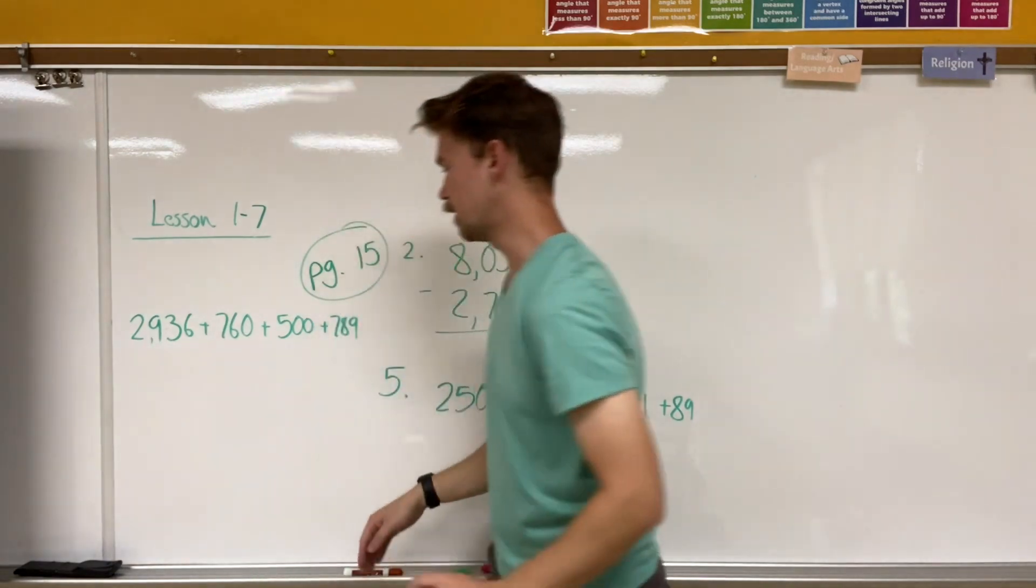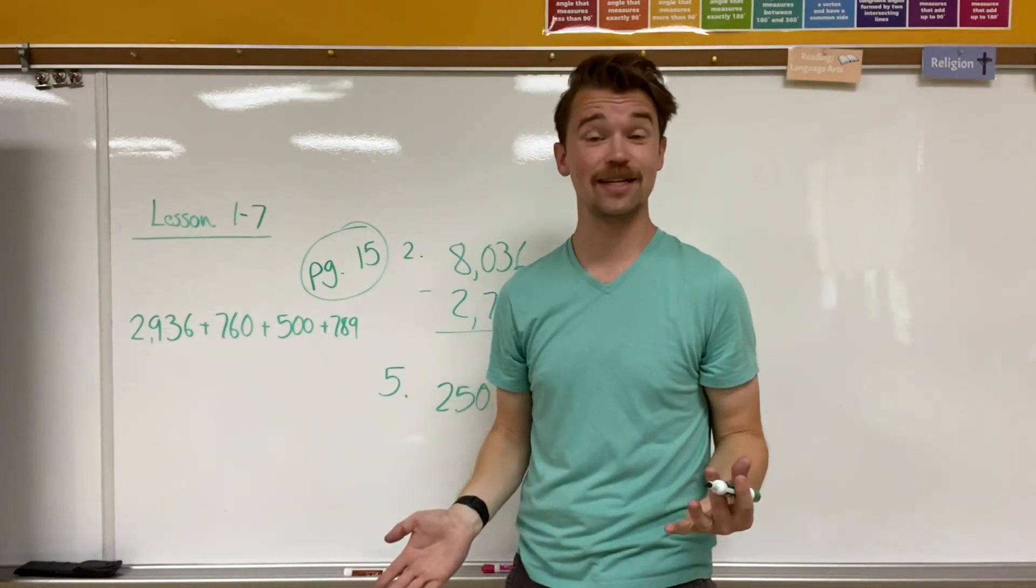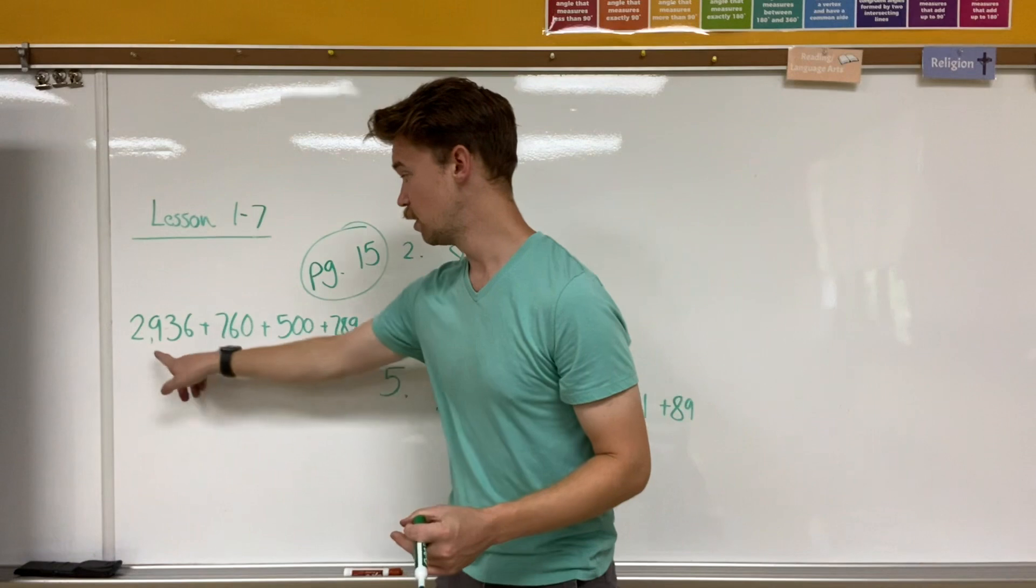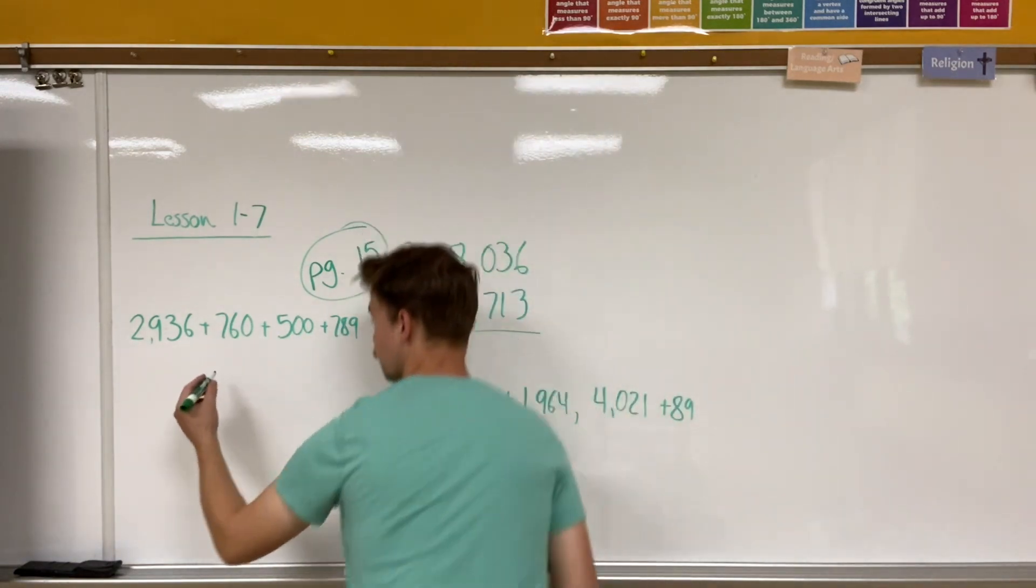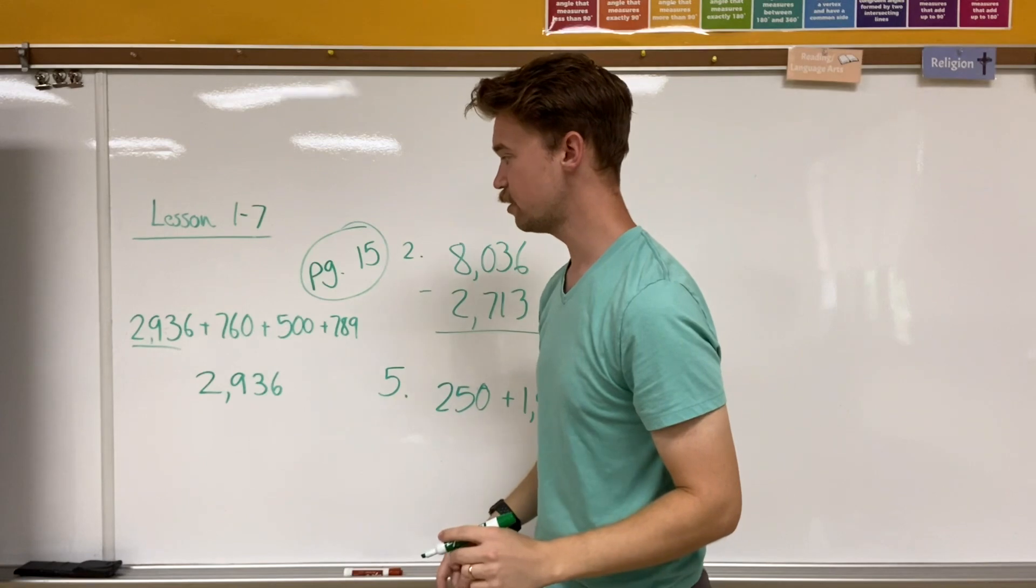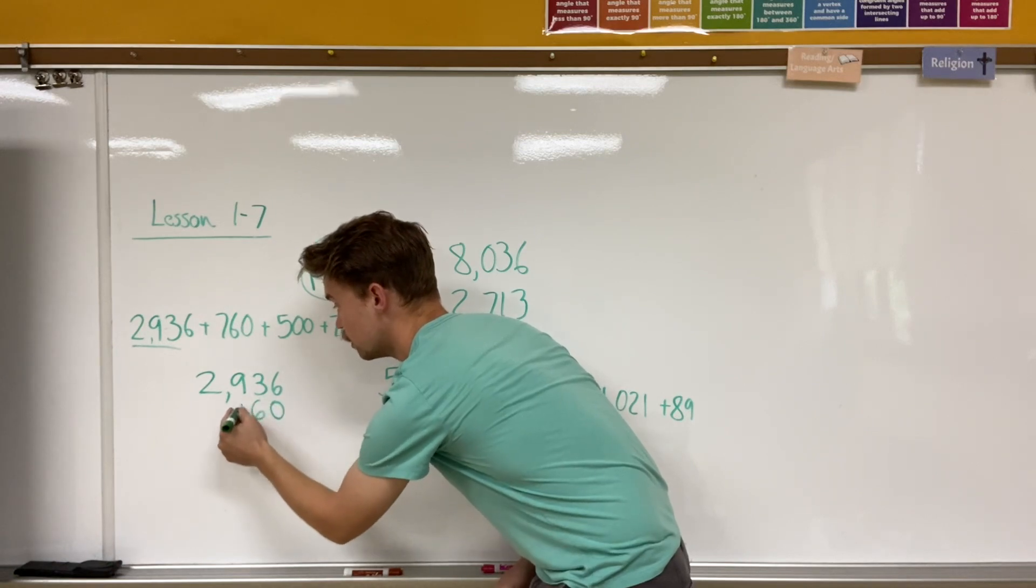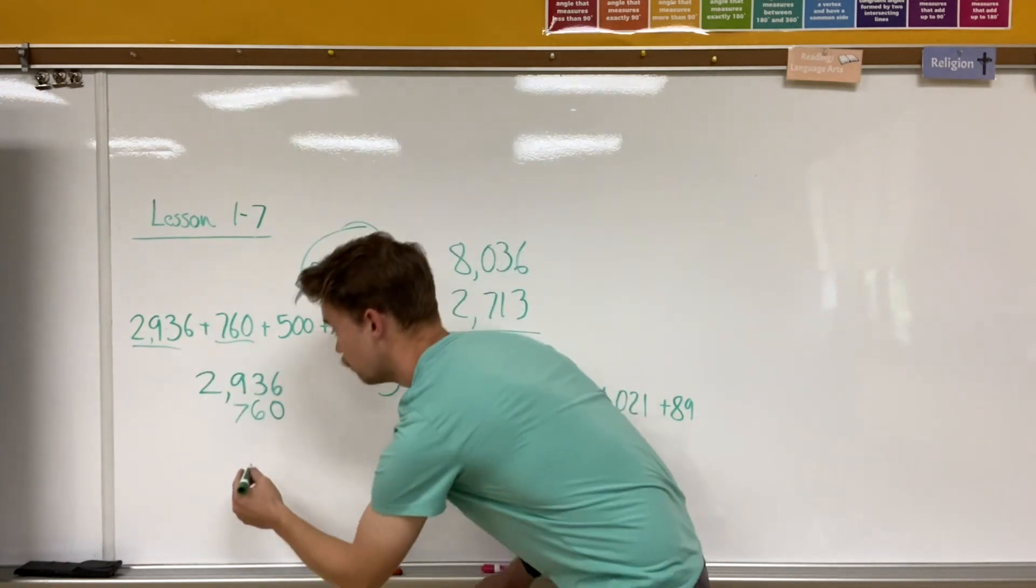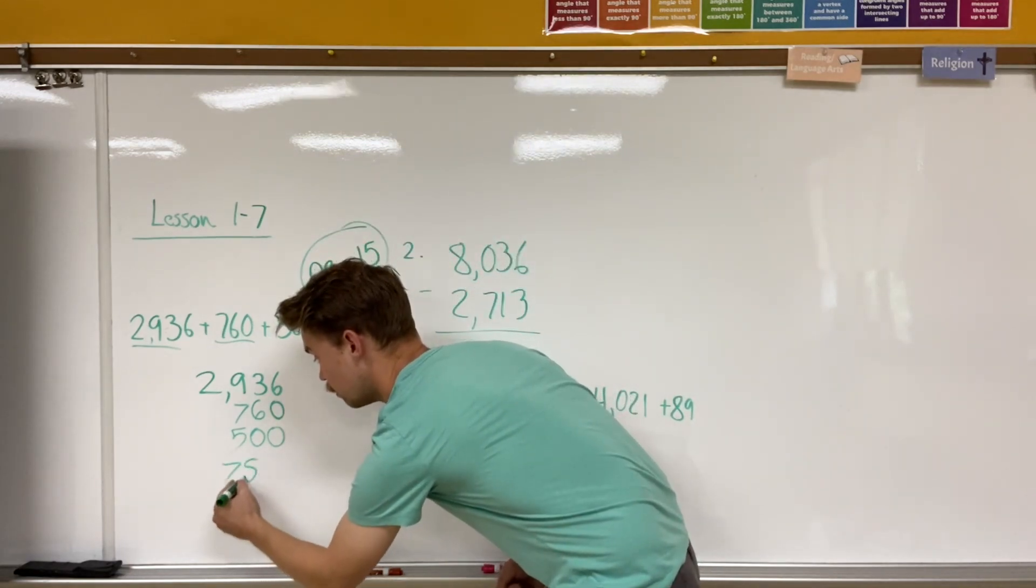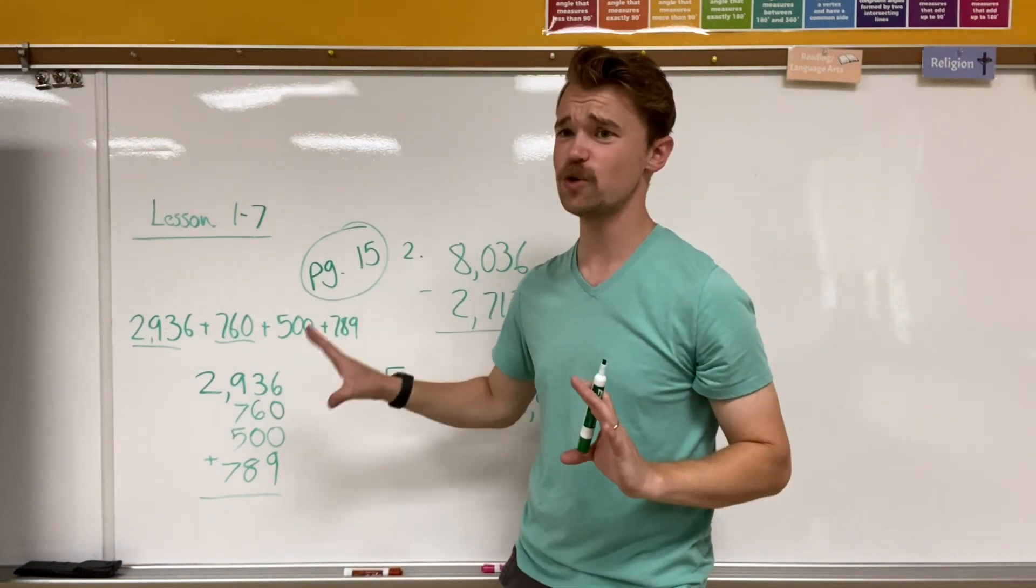Now, before we move on to our practice problems, we have one last thing to do. We need to align these numbers and add them together. So right now they're in horizontal. We want them to be vertical because it's easier to add and easier to subtract. So best way that I know how to do it is I look to see what my bigger numbers are. Well, I know that's my bigger number. And so I'm going to write that one first. I'm going to go 2936. I'm done with that one. Now I'm going to move on to 760. And so I see that it's only three digits long. So I'm going to write backwards and go to zero, six, and seven. And that one's done. 500 is pretty easy. It's the same distance as 764 digits and 789. And my next step would be to add them together. So this was just a demonstration on how to align the numbers.